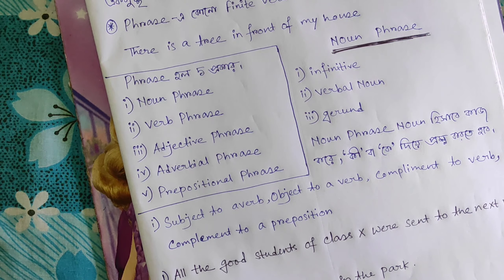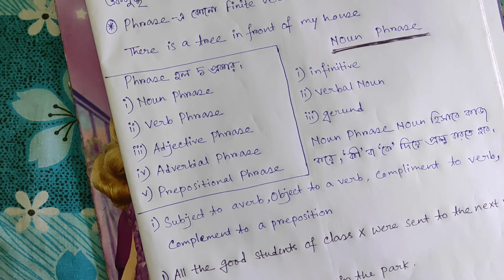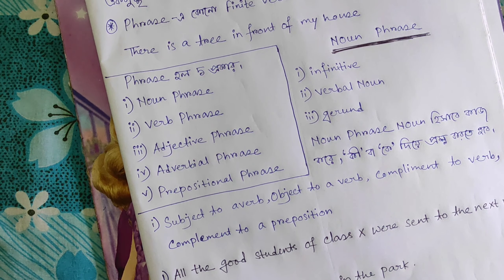A noun phrase can function as: subject to a verb, object to a verb, and complement to a preposition. These are the main roles a noun phrase plays in a sentence.